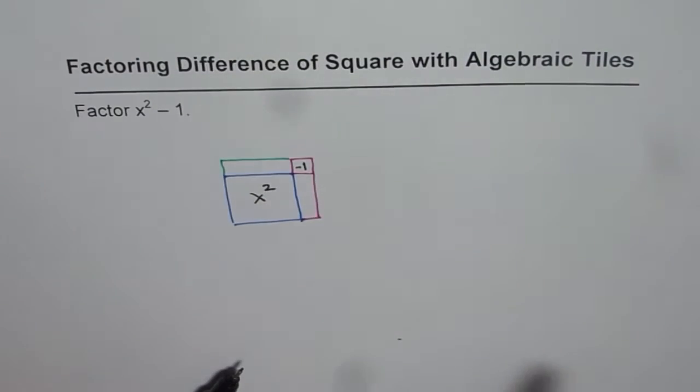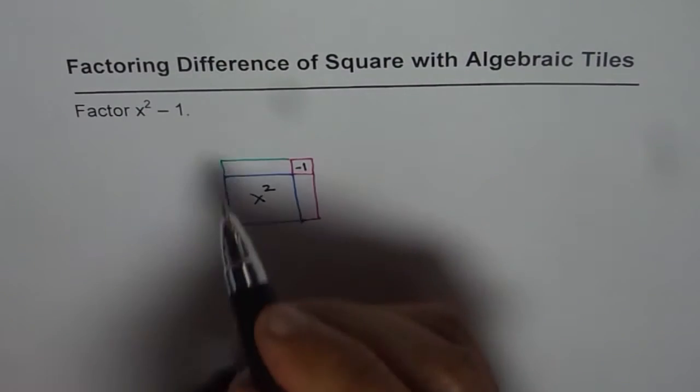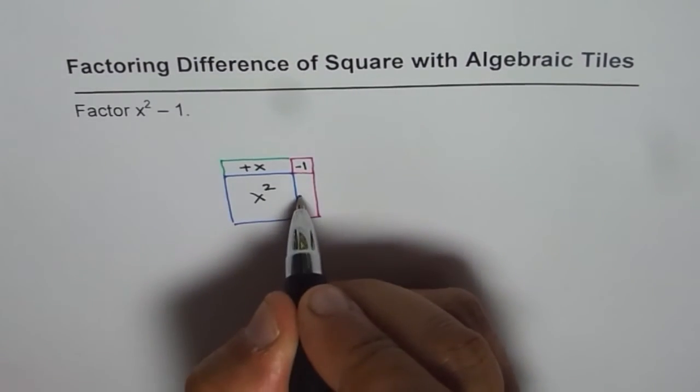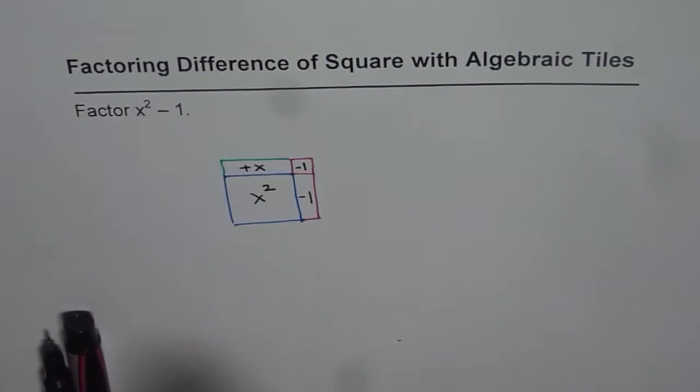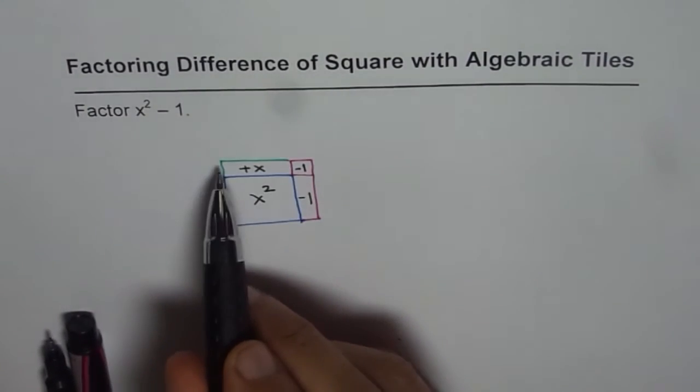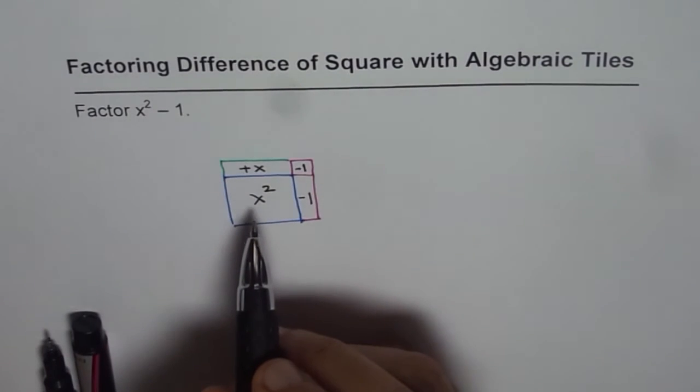So that is our plus x and this is minus x. Now we get a square and you can write this square as length times width. So the dimensions are,